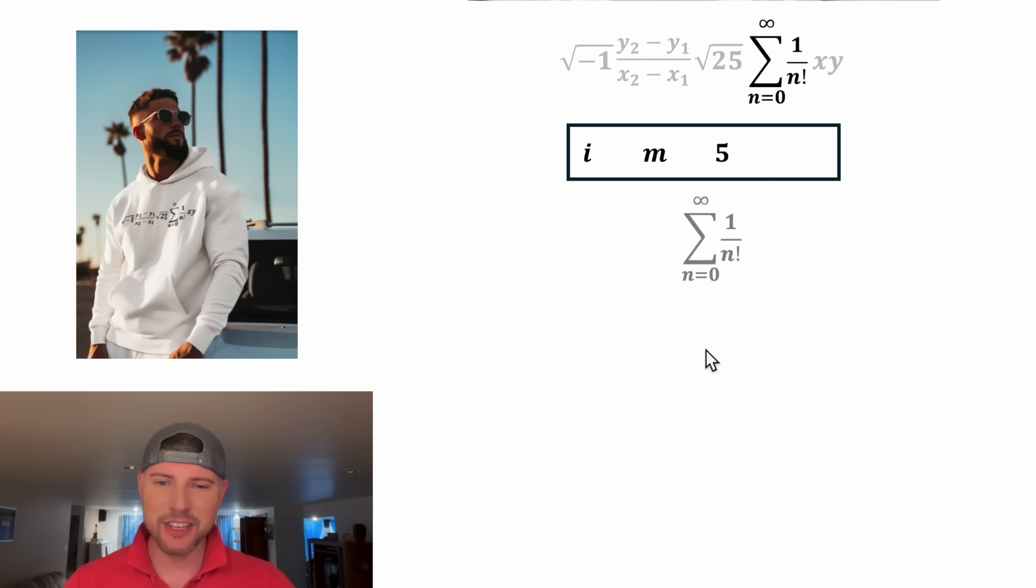Next, we have this here. This is called sigma notation or summation notation. The idea is we're going to add up a whole bunch of these. We'll have 1 over n factorial where we plug in 0, then 1 over n factorial where we plug in 1, and then 2 for n, 3 for n, 4 for n. And this is going to go on forever. So let's start out by evaluating the first couple ones.